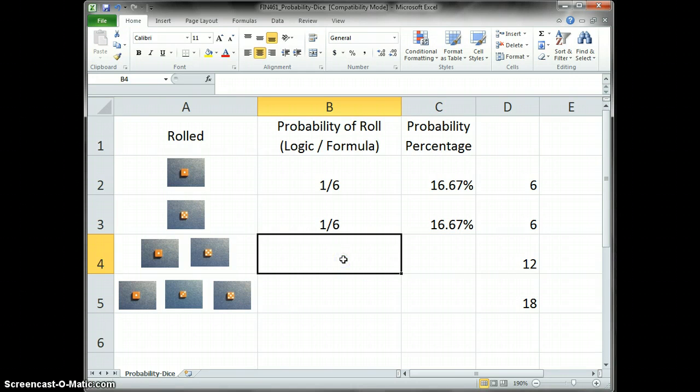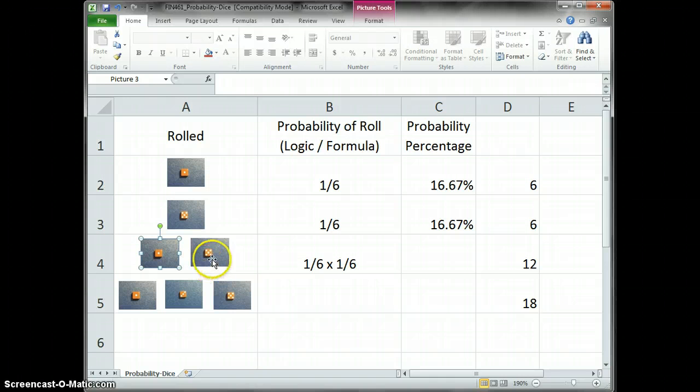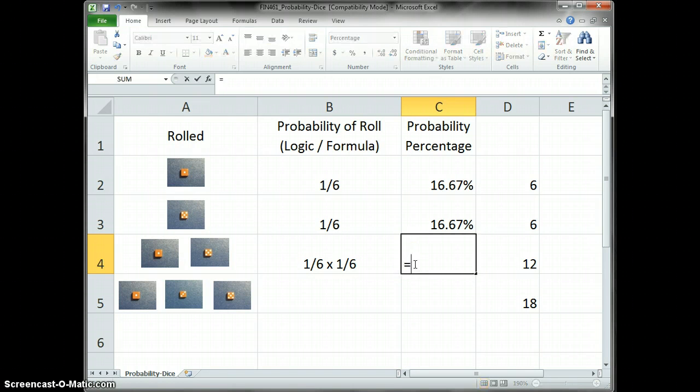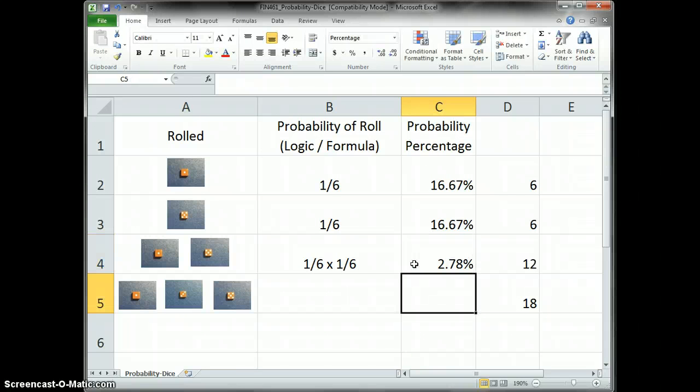Now, on this one, the logic is one divided by six times one divided by six. Because what we have here is, we have one side of a six-sided dice, and we have one side of a six-sided dice. So this would equal, it doesn't really matter when you think about order of operation, but one divided by six times one divided by six. So the probability of rolling a five and a one on two dice is 2.76%.